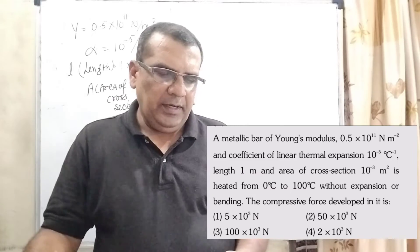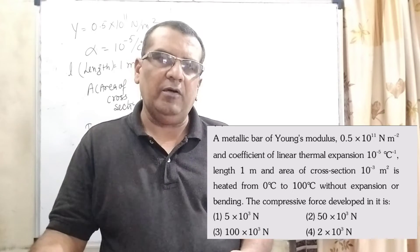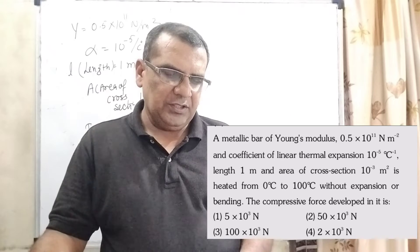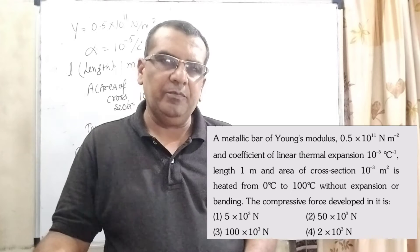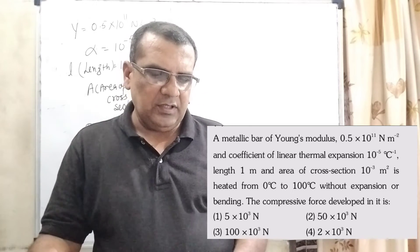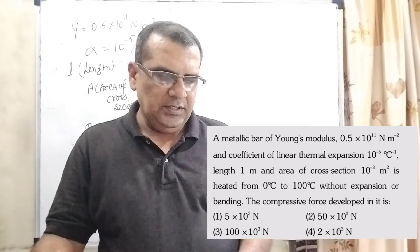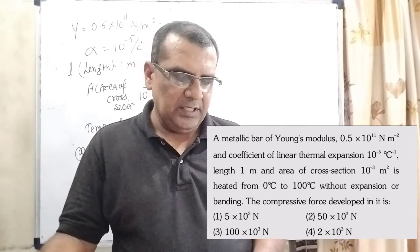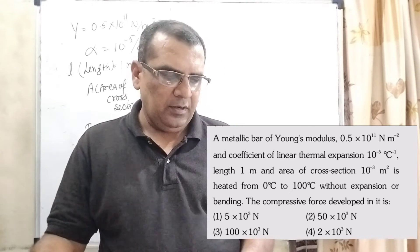Now, here is the question. A metallic bar of Young's modulus 0.5 into 10 raised to power 11 Newton per meter square and coefficient of linear thermal expansion 10 raised to power minus 5 per degree Celsius, length 1 meter and area of cross section 10 raised to power minus 3 meter square is heated from 0 degree Celsius to 100 degree Celsius without expansion or bending.